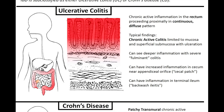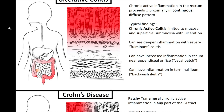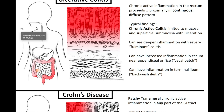Inflammatory bowel disease is subclassified as either ulcerative colitis or Crohn's disease. The umbrella term is IBD, but it can be broken down based on what you see under the microscope and clinically. In ulcerative colitis, you'll see chronic active inflammation starting in the rectum, proceeding proximally in a continuous, diffuse pattern. The typical histological findings are chronic active colitis — neutrophils and features of chronicity like architectural distortion or pyloric gland metaplasia.